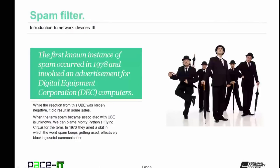If the sending SMTP server is listed, the message is accepted and not counted as spam. The first known instance of spam occurred in 1978 and involved an advertisement for Digital Equipment Corporation computers. While the reaction was largely negative, it did result in some sales, and the spam industry was born. The term spam became associated with unsolicited bulk email, with the term attributed to Monty Python's Flying Circus, which in 1970 aired a skit in which the word spam keeps being used, effectively blocking useful communication.